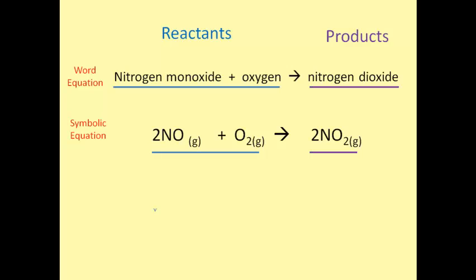The value of a symbolic equation over a word equation is that it gives you a ratio. It tells you exactly how many molecules of each type of substance are required to react and the number of product molecules that are produced. In this case, the symbolic equation tells us that 2NO molecules react with one O2 molecule to produce 2NO2 molecules.